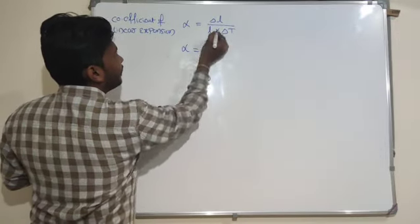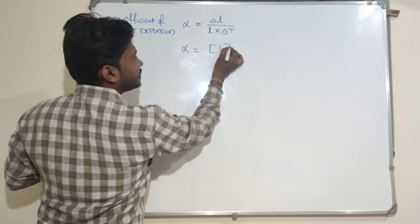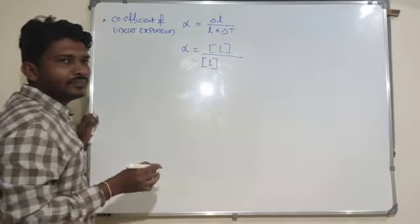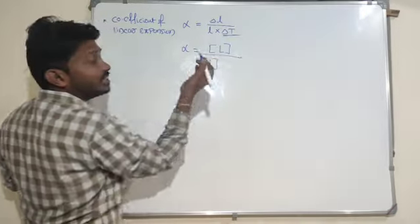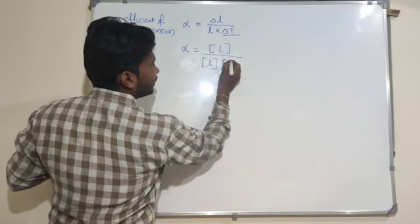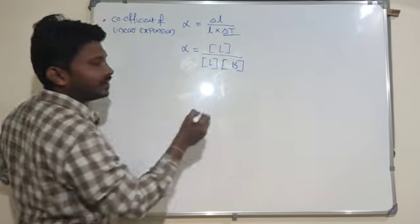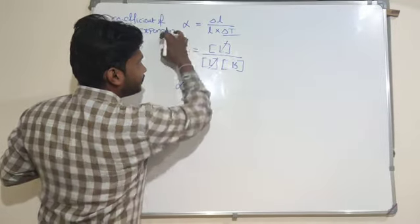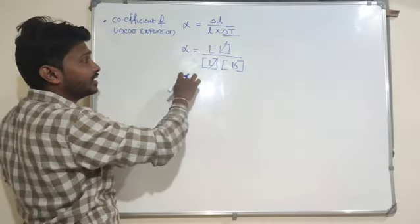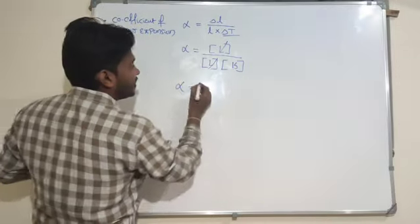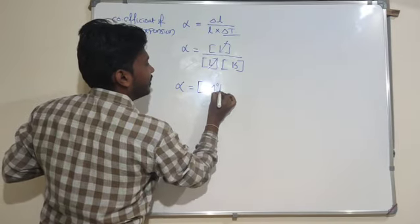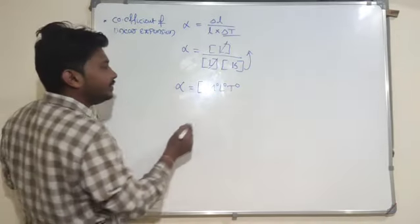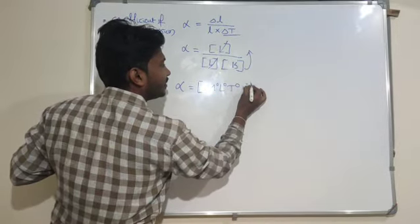In order to write the dimensional formula: delta L means length, and in the denominator also a length term is there, so they cancel out. Delta T means temperature, written as K in terms of Kelvin. So alpha equals M0 L0 T0, and since K is in the denominator, we take it to the numerator as K to the power of minus 1.